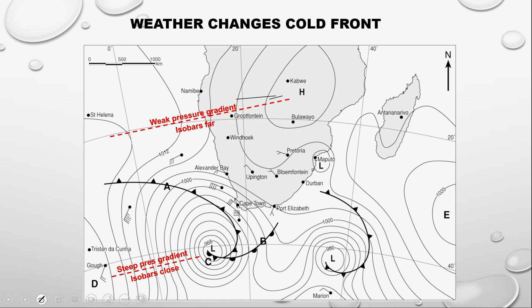Getting closer to the weather along the fronts — look at the isobars, very, very close to each other, and that is a steep pressure gradient. Now, behind a cold front, the pressure gradient will be steep. But what does that mean? It also means that there will be very strong winds. Those strong winds are going to be behind the cold front.